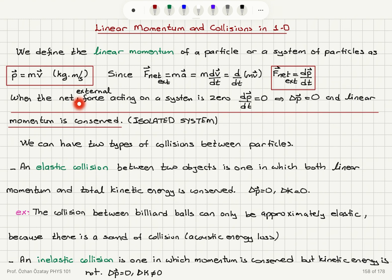When the net external force acting on a system is zero, we have dp/dt = 0. That means linear momentum does not change with time — linear momentum is a conserved quantity, delta p = 0. This is what we call an isolated system: the system is isolated in terms of the external force acting on it, and in that case we have conservation of linear momentum.